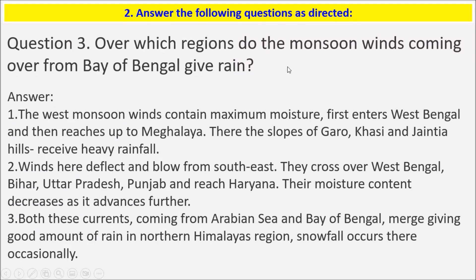This situation is known as October heat, locally known as 'Bhadravi Tap.' Over which region do the monsoon winds coming over from the Bay of Bengal give rain? The southwest monsoon winds contain maximum moisture and first enter West Bengal, then reach up to Meghalaya. The slopes of Garo, Khasi and Jaintia hills receive heavy rainfall. The winds deflect and blow from the southeast, crossing West Bengal, Bihar, Uttar Pradesh, Punjab and reaching Haryana, where their moisture content decreases. Both currents coming from the Arabian Sea and Bay of Bengal merge, giving a good amount of rain; in the northern Himalayan region, snowfall occurs occasionally.